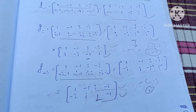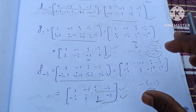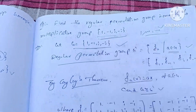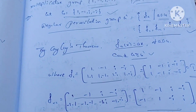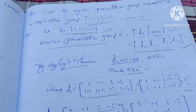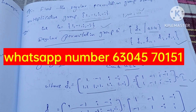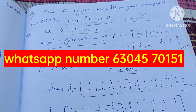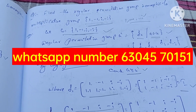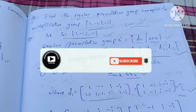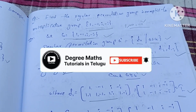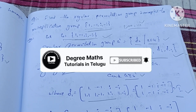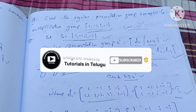So the regular permutation group is equal to this. The multiplicative group's regular permutation group is constructed this way. If you have any questions, please send us the maths notes and a message. Please like and share with your friends. Thank you.